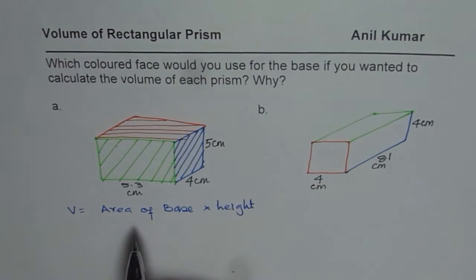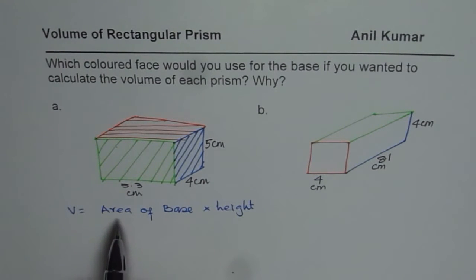Normally, you know, multiplication is commutative, so you can multiply in any particular order. But if you want to identify a base, which dimension in the given figures should we take as the base? That is kind of the question which we are trying to understand.